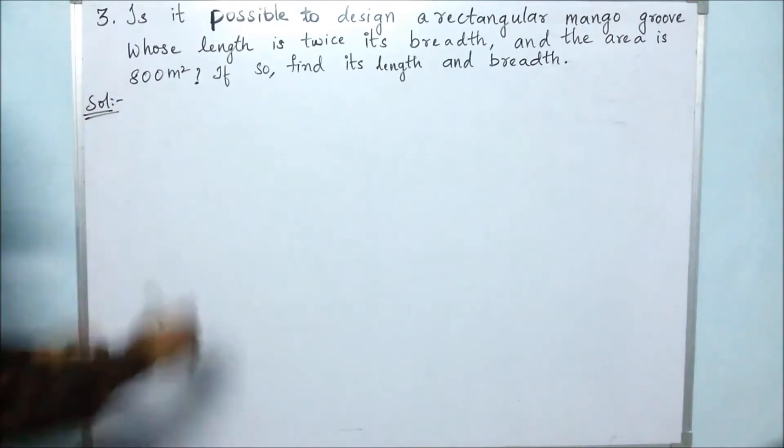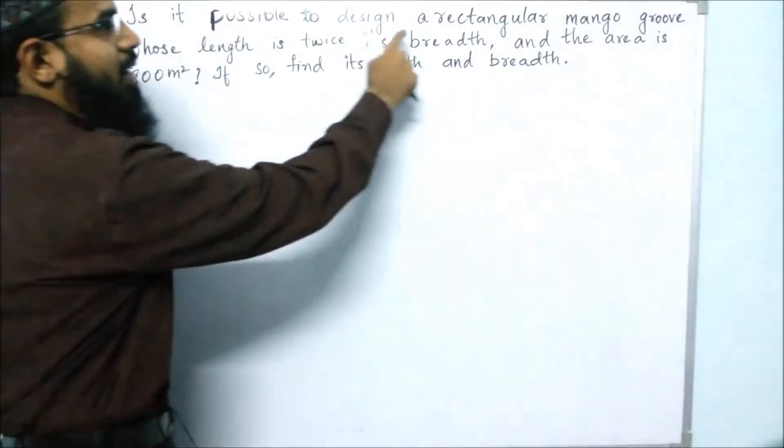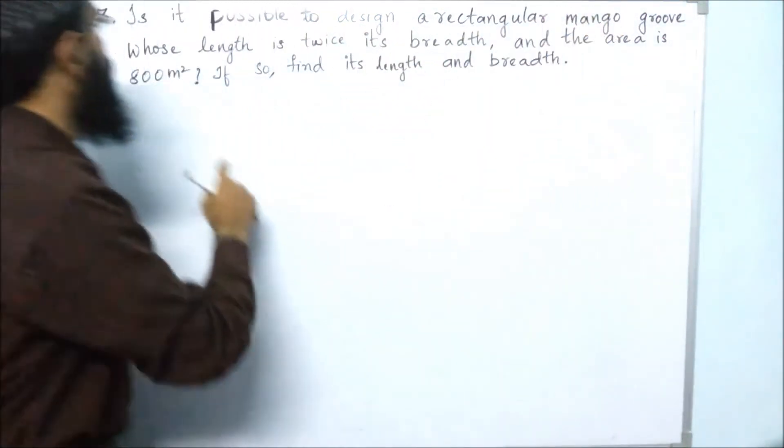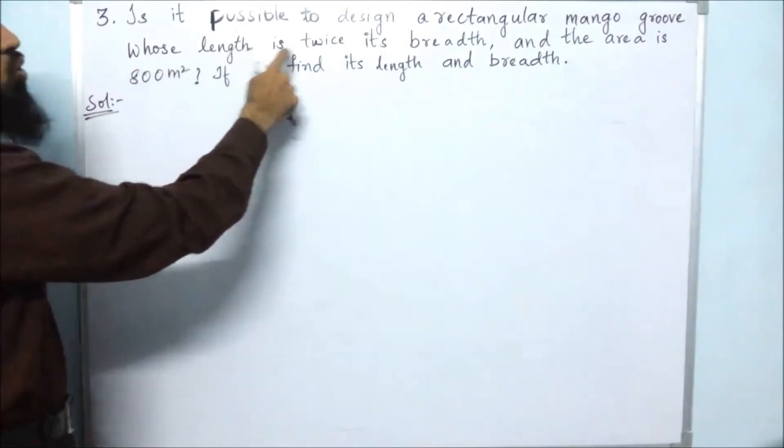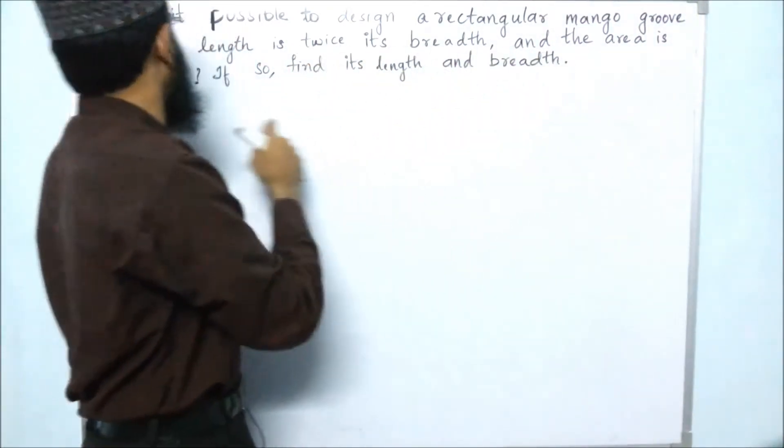Is it possible to design a rectangular mango grove whose length is twice its breadth and the area is 800 square meters? If so, find its length and breadth.